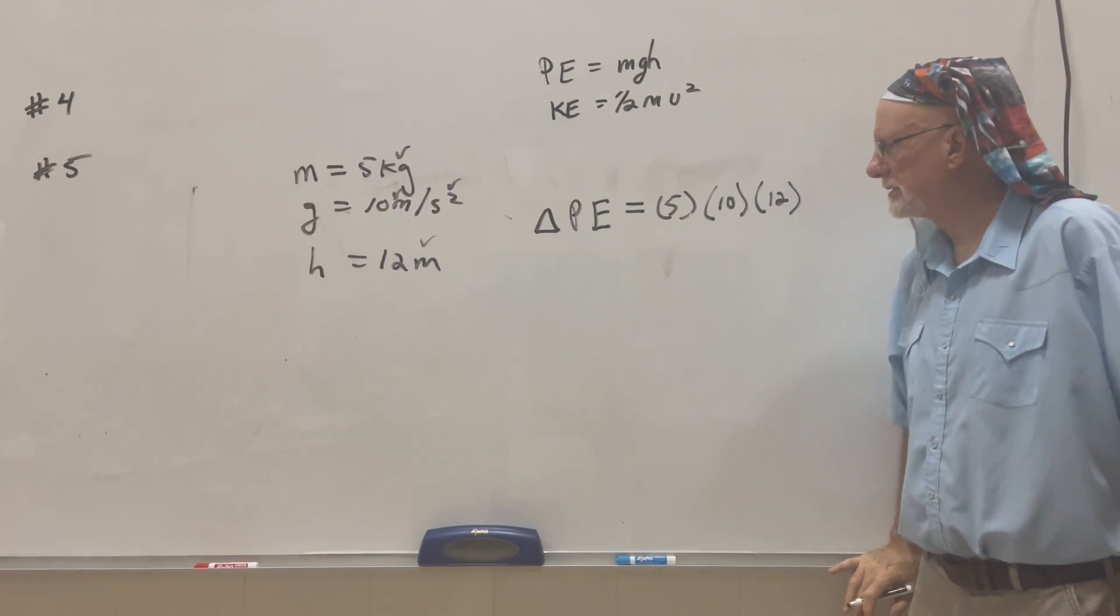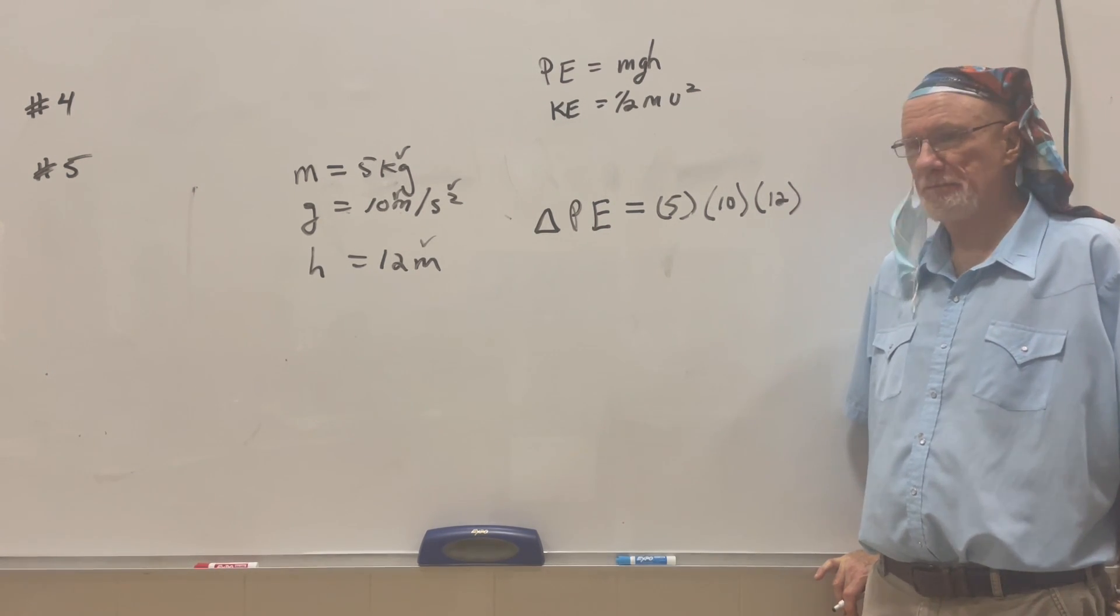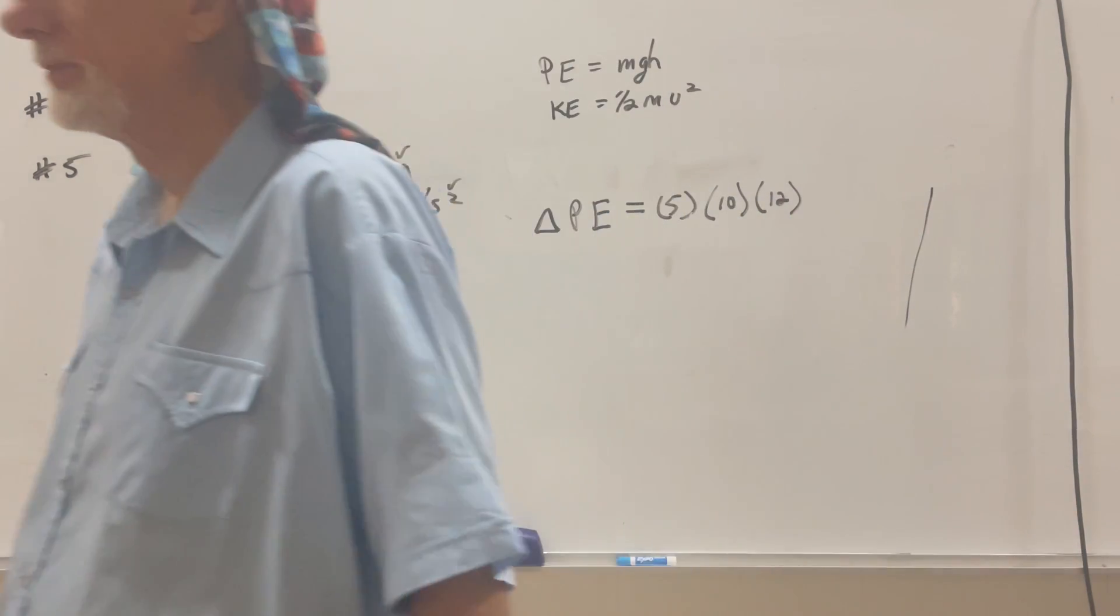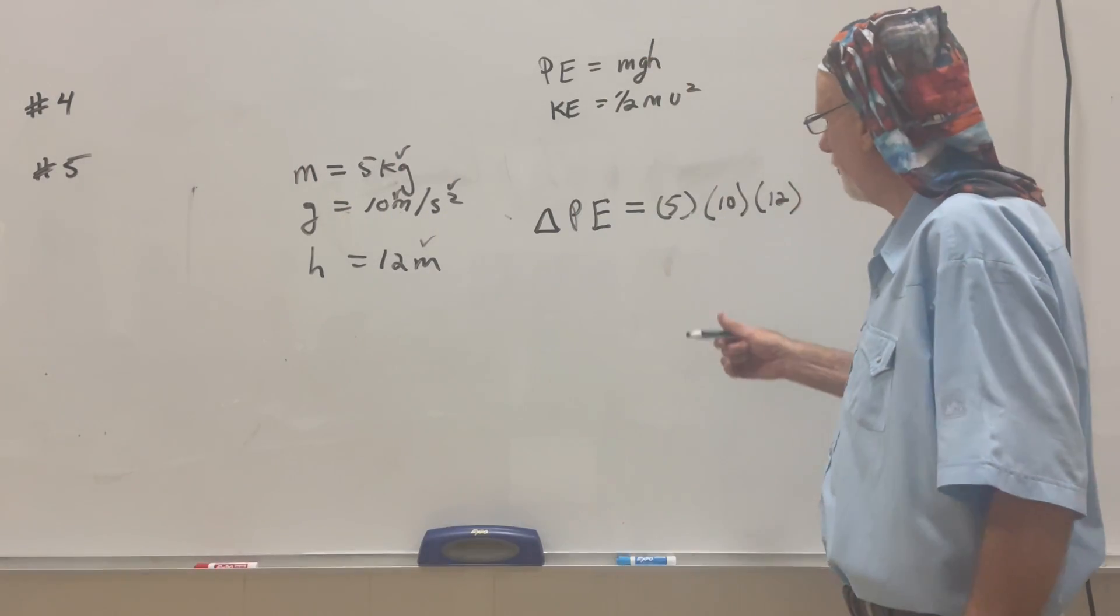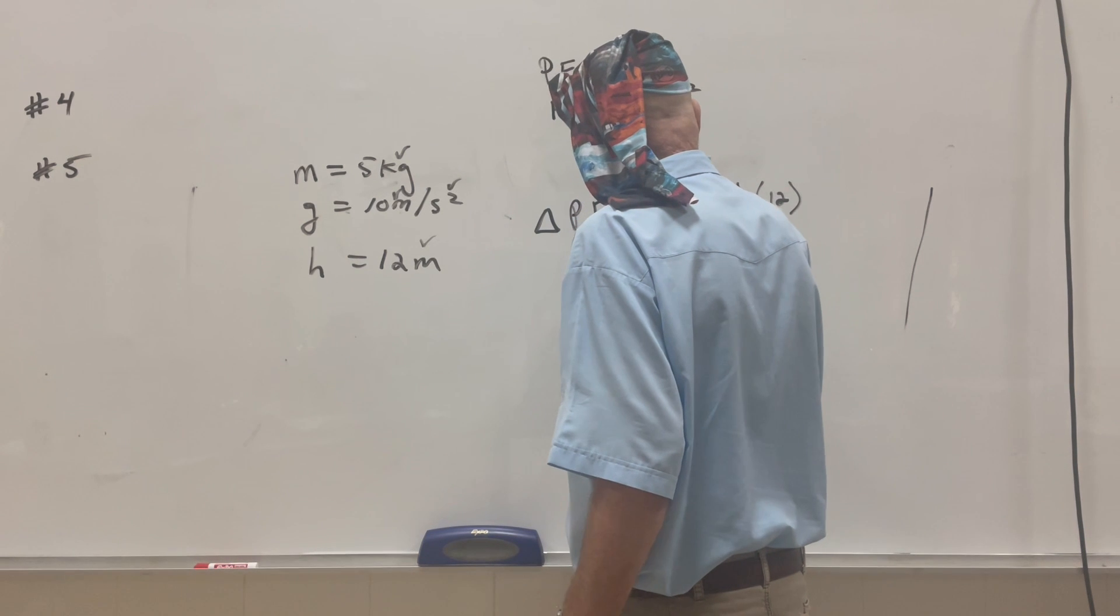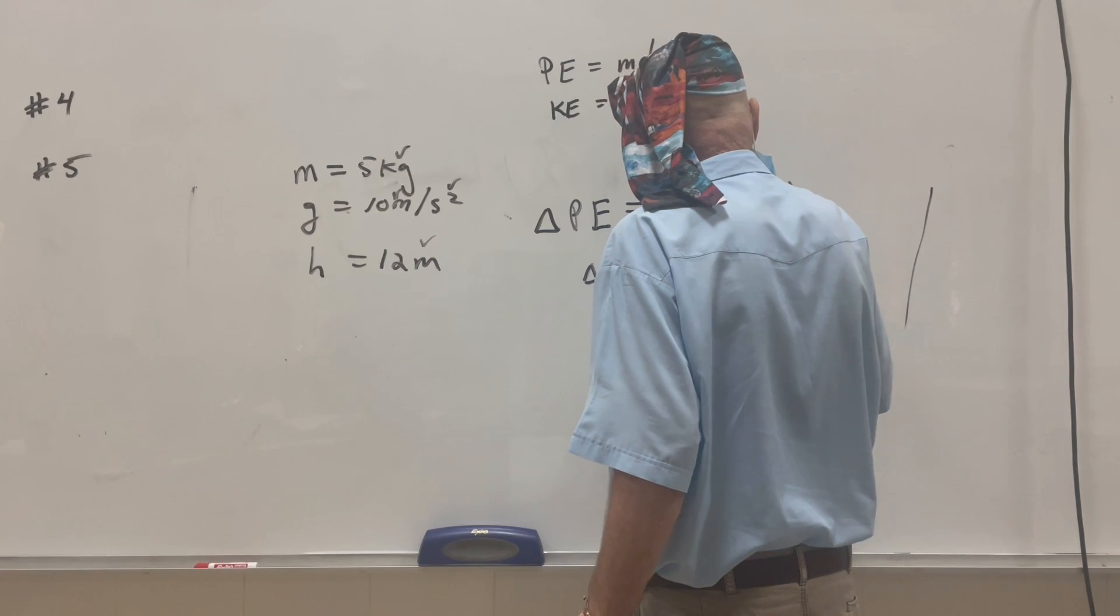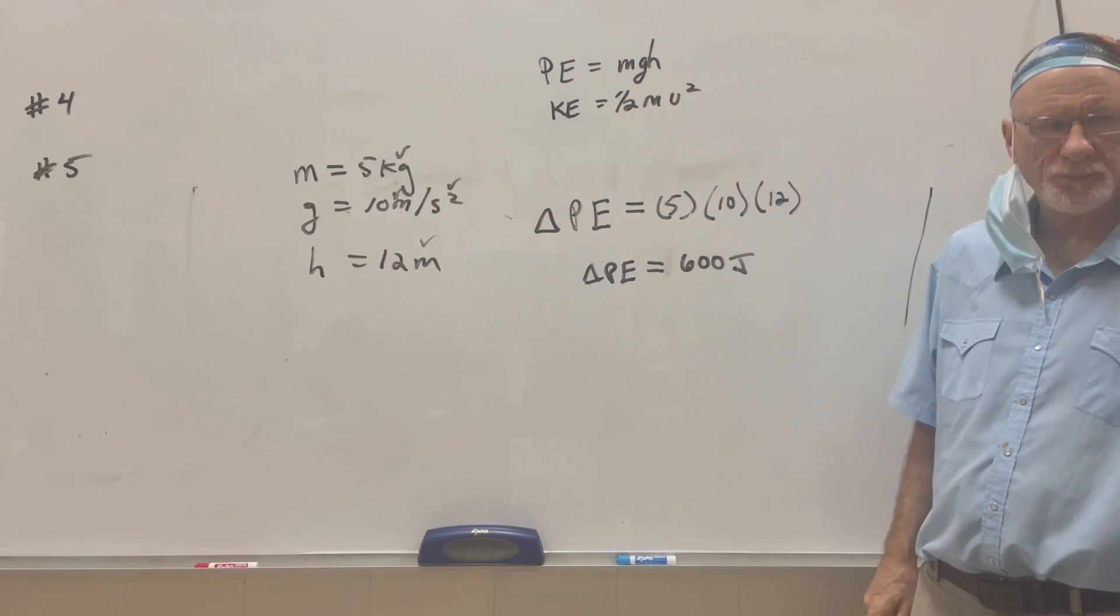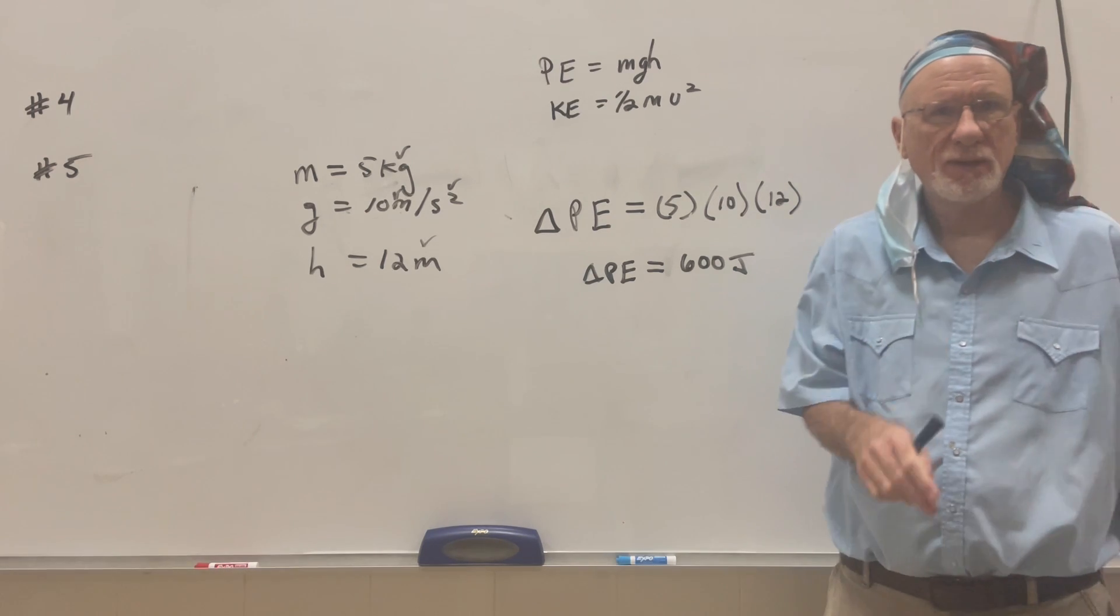So, what is 5 times 10 times 12? What is it? 600. 600, right? Yeah. 600. Well, you know 5 times 12 is 60. Times 10 would be 600. So, the change in potential energy would equal 600 joules. Okay? Clear? All right? Yes? Okay with that? That's all.